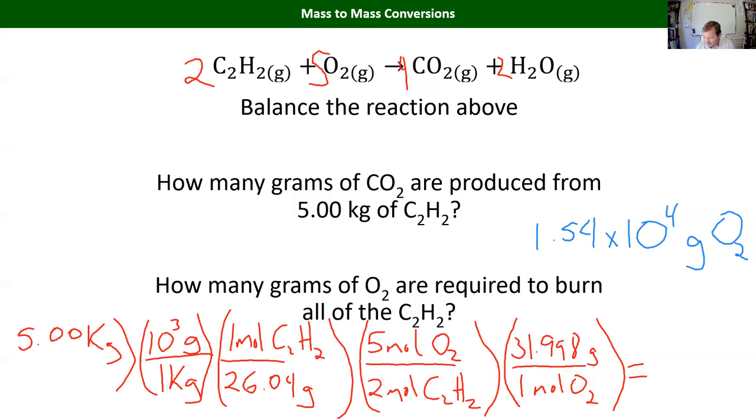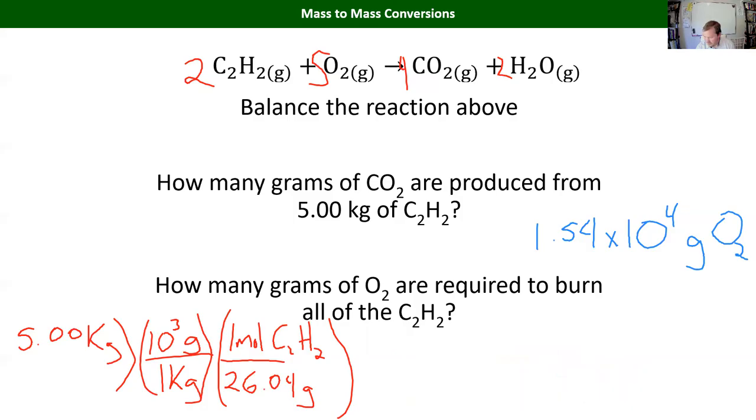And when we plug all that in, 1.54 times 10 to the fourth grams of O2. And again, if you, if it helps you see it, the logic better, you can stop right here and hit enter on your calculator. So that you can go from five kilograms to moles of C2H2. And then you could take moles of C2H2 and turn it into moles of oxygen. And then you could take moles of oxygen to go to grams of oxygen using the molecular weight. And it's just, it's with these stoichiometry problems, it's always a matter of how do I get to moles of my starting material or whatever information you've given to start. How do I get to moles? And then how do I get from moles of one thing to moles of another? And that's always going to be from the coefficients.